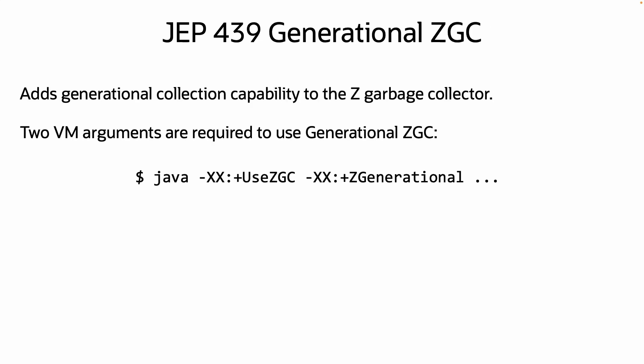JEP 439 adds generational capability to the Z garbage collector. To use this, you will need to use the VM arguments --use ZGC and --Z generational.